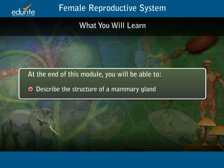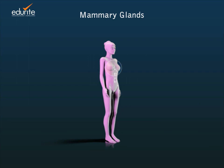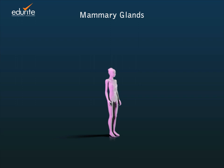At the end of this module you will be able to describe the structure of a mammary gland. Mammary glands are a pair of external organs of the female; they are commonly called breasts. Their main function is to produce milk to nurture a baby.